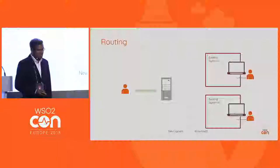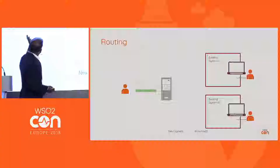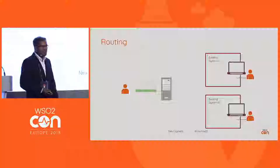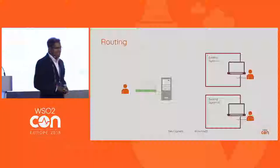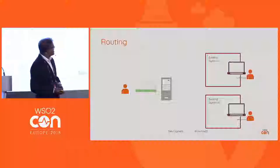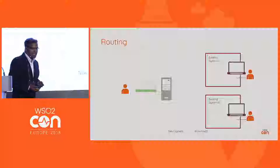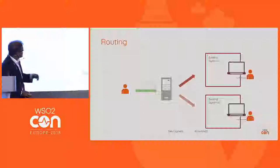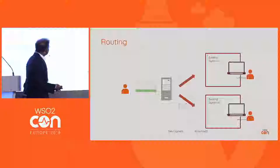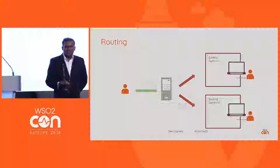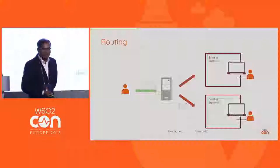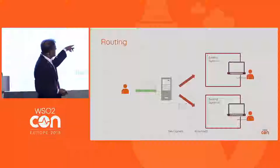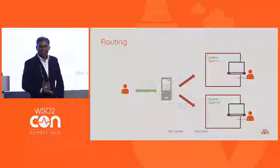And then routing. Here the user is sending two kinds of messages to our new system, and we need to route the message based on either a header or a property to the matching system in the brownfield. We may look at the incoming message for a header, the content, or some kind of property, and then route the message to one of the existing systems.